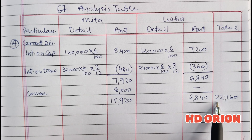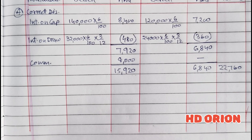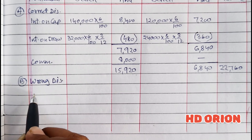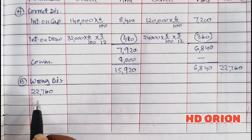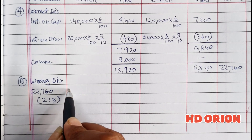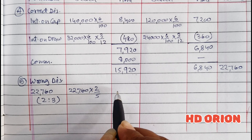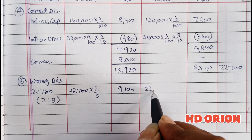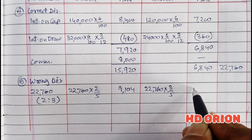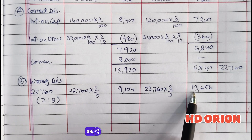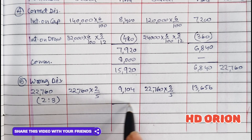So there is a misappropriation of Rs. 22,760. What did the firm do with this amount? The firm had given this amount to the partners in their profit sharing ratio. So under the wrong distribution, Rs. 22,760 has been allowed to them in their profit sharing ratio of 2:3. Now we will compare correct distribution (A) minus wrong distribution (B).